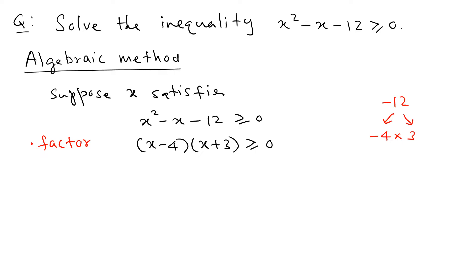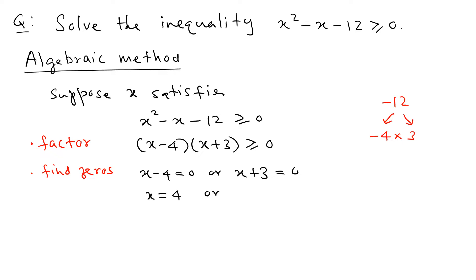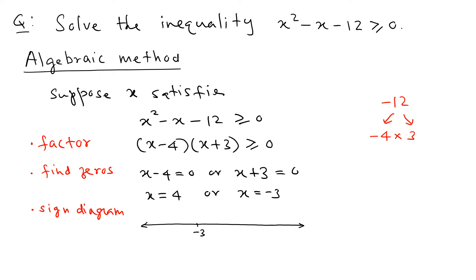The next step is to find the zeros. We set those two factors equal to zero: x minus 4 equals 0 or x plus 3 equals 0, giving x equals 4 or x equals negative 3. After finding the zeros, we draw a sign diagram — a number line with the zeros placed in order from smaller to larger: negative 3 then 4.